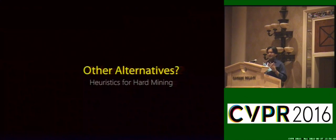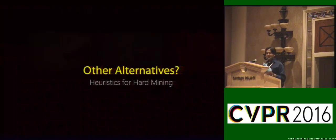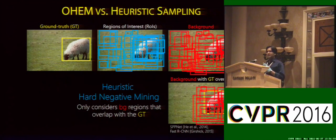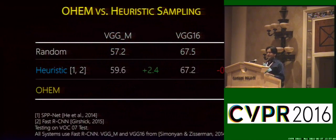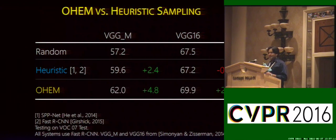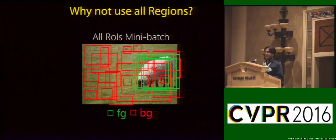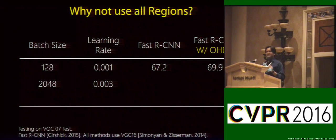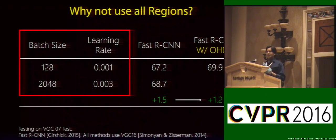Now let's compare the proposed approach to some other heuristic approaches used for hard mining. One such approach considers only those background regions which have some minimum threshold overlap with the ground truth box — we call this the heuristic hard mining approach. Compared to random sampling, this heuristic gives some improvement for the VGG medium network but none for the VGG16 network. Our proposed online sampling provides more than a two point boost over this heuristic across both networks. Another heuristic is to do no sampling at all and use all regions during training — using this setting gives a 1.5 point boost over the standard heuristic method, but our method not only performs better but is much faster to train without needing to adjust hyperparameters.